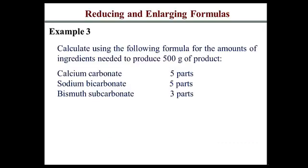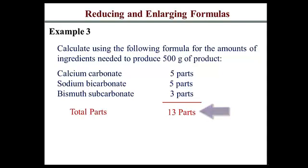Let's look at a third example — how you may come across older formulas where ingredients are specified by parts, indicating the relative proportion of each component. The first step is to determine the total parts, which is the sum of all components: 5 parts calcium carbonate, 5 parts sodium bicarbonate, and 3 parts bismuth subcarbonate, giving a total of 13 parts. This total represents the entire quantity of product, which in this case corresponds to 500 grams.